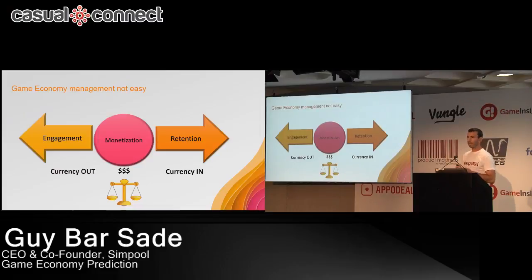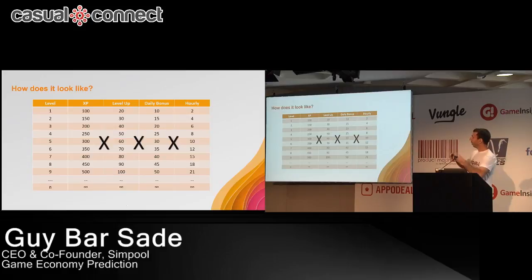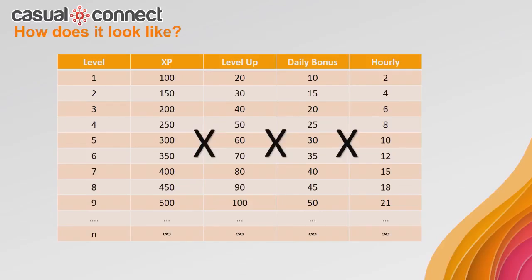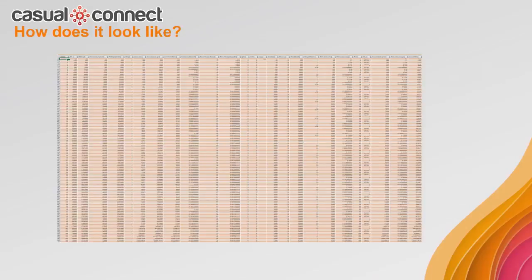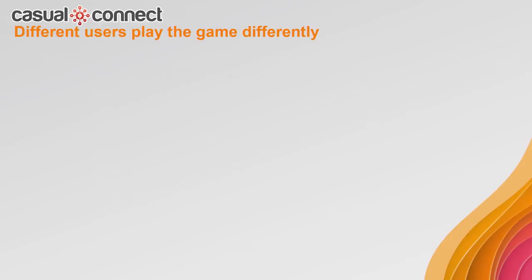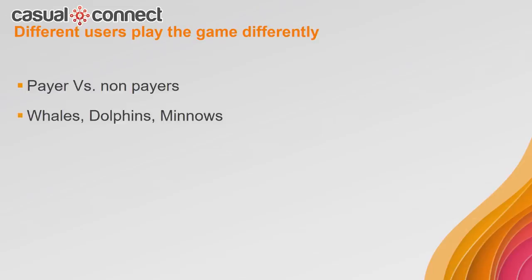When we create a game economy, on a high level it looks like this — we have many parameters and a lot of permutations between them. And if I drill down into it, think how many options we can have. But the thing is that we are different. Different users play the game differently, and we can think of a few segments. We have payers and non-payers, each one consuming the game differently. We have whales, dolphins, and minnows, each paying differently — some frequently, some rarely.